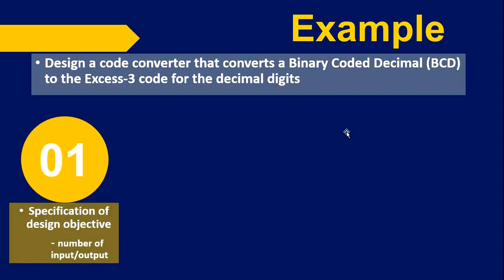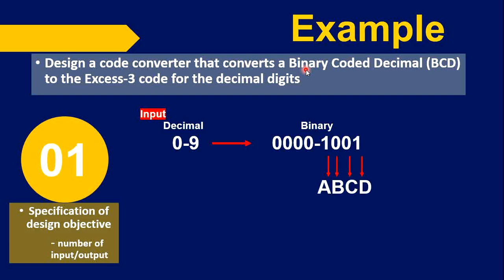First, let us understand the requirement. The input is Binary Coded Decimal and the output is Excess-3 code. The input is decimal from zero to nine, and then we have to convert it into binary. The binary equivalent is from 0000 to 1001. The binary bits we need are four: A, B, C, D as our variables for the input.